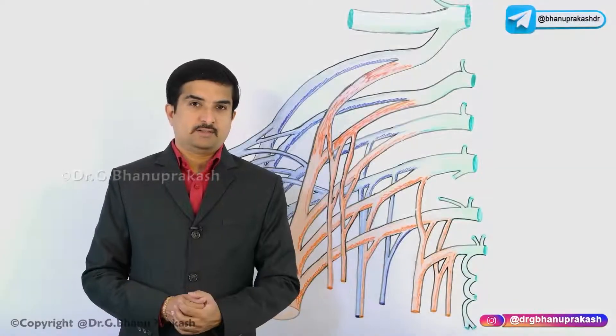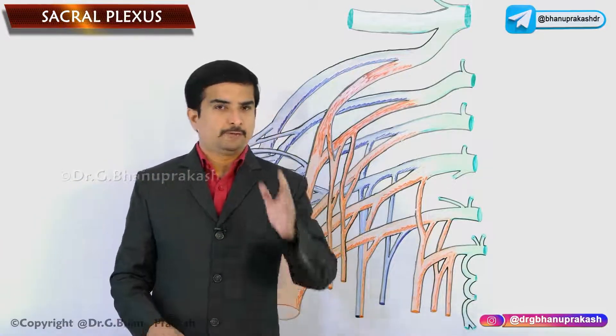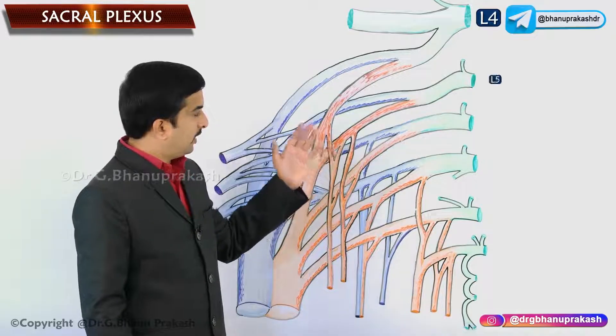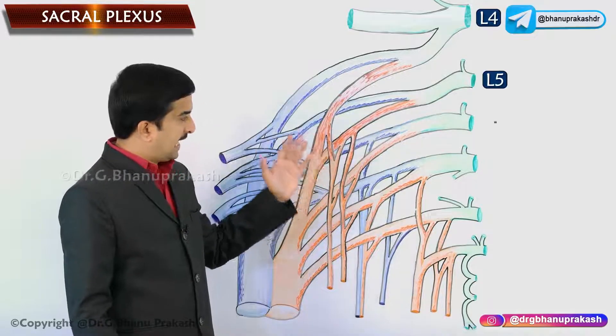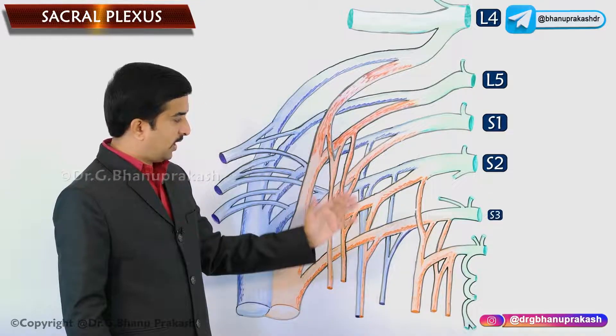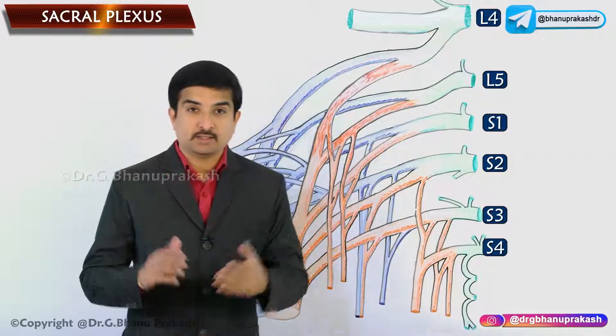In this session let us begin with the sacral plexus. The sacral plexus is formed from the ventral ramus of L4, L5, S1, S2, S3, as well as S4 nerves.